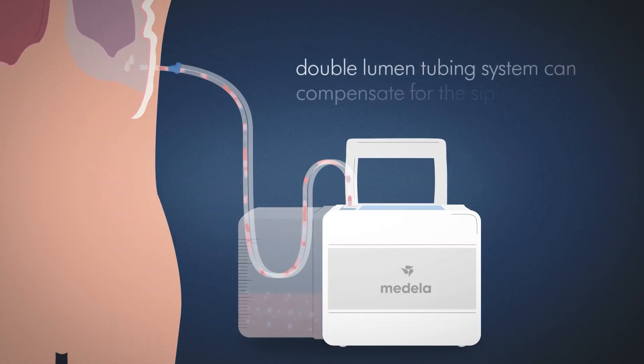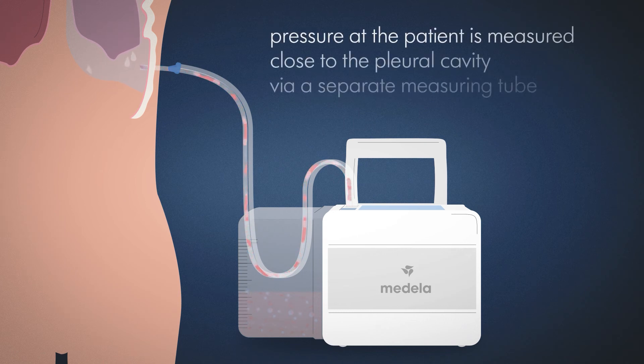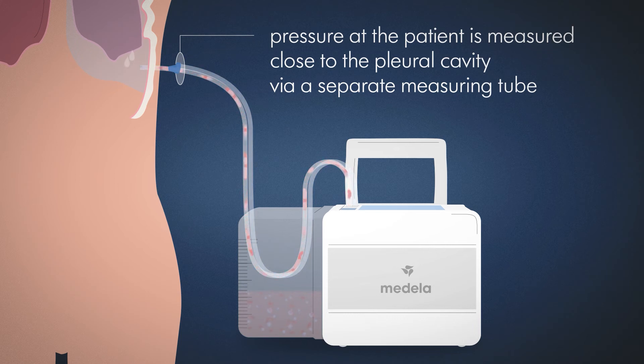With a double lumen tubing system, digital devices such as TOPAS Plus can compensate for this effect. In this case, the pressure at the patient is measured close to the pleural cavity via a separate measuring tube that is not carrying any fluids.